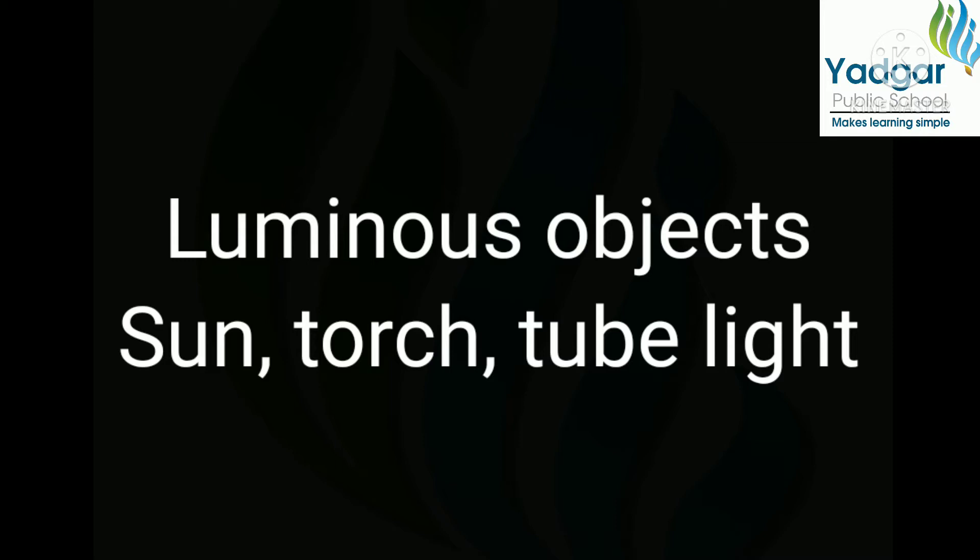The sun is a natural thing, so it is called a natural luminous object. Again, a torch or tube lights are called artificial or man-made luminous objects.